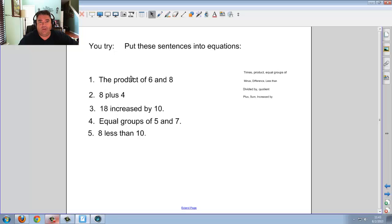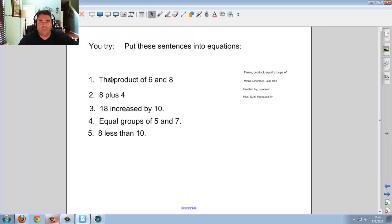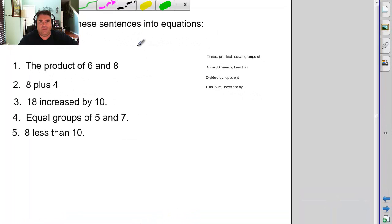Hopefully, you've paused it and went ahead and tried to put these into equations. And when you do that, you would come up with different things. For instance, what you would have here is the product of 6 and 8. You should have 6 times 8. 8 plus 4, you're going to have 8 and then plus 4, obviously.